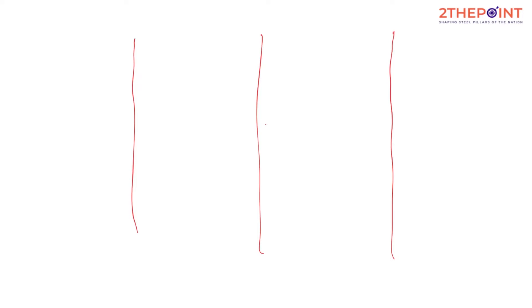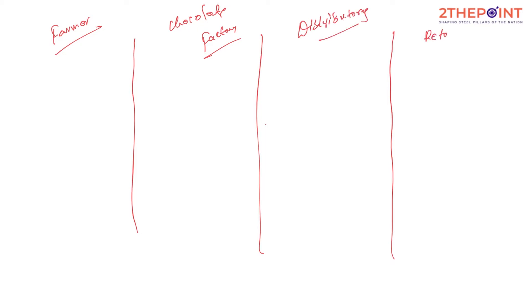A product has to go through two to three minimum stages. Here is a simple example: there is a farmer, a chocolate factory, a distributor who buys chocolates from the factory and distributes them to the retailer, and the retailer finally sells to the consumer. These are the different stages of the product.